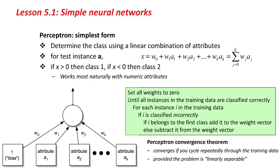Here's the algorithm. We start by setting all weights to 0. Until all instances in the training data are classified correctly, we continue for each instance: if it's classified correctly, we do nothing; if it's classified incorrectly, then if it belongs to the first class we add it to the weight vector, and if it belongs to the second class we subtract it from the weight vector. There's a theorem — the perceptron convergence theorem — that if you continue to do this, cycling repeatedly through the training data, it will converge, providing the problem is linearly separable, meaning there exists a straight line that separates the two classes.